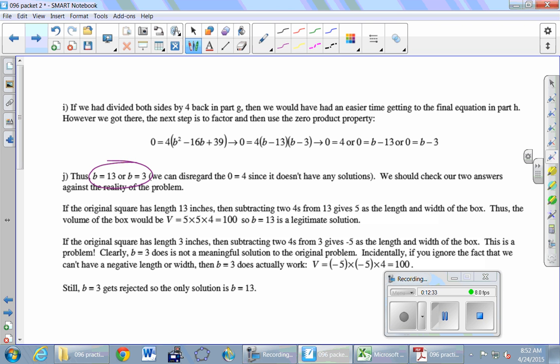But suppose that you have not a 13 by 13 square to start with, but a 3 by 3 square to start with. And you try cutting out 4 from the top and 4 from the bottom, what happens? You can't do it, right? You've run out of paper. You don't have 4 inches to cut out on top and bottom. You only started with 3.